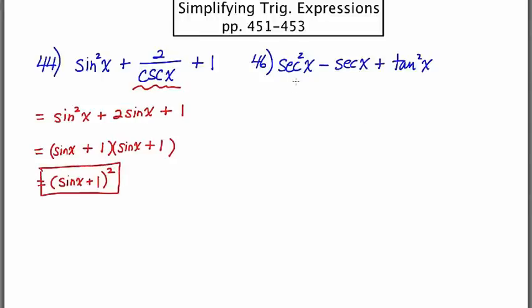In number 46, we have the issue of not having this, we're not entirely in the same trig family. So, I think I'm going to focus on this tangent squared and see what I can do with that. So, I'm going to say secant squared x minus secant x. Now, I know that 1 plus tan squared is secant squared. Which means that tan squared alone is going to be secant squared minus 1.